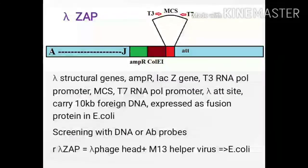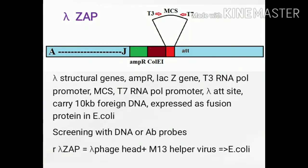Phasmid lambda sap has the structural genes A to J coding for the head and tail portions of the lambda phage DNA, an ampicillin resistance gene and ColE1 origin of replication of the plasmid, T3 and T7 RNA polymerase promoters flanking the multiple cloning site present within the lacZ gene, and a lambda phage attachment site which helps in the homologous recombination with the E. coli.